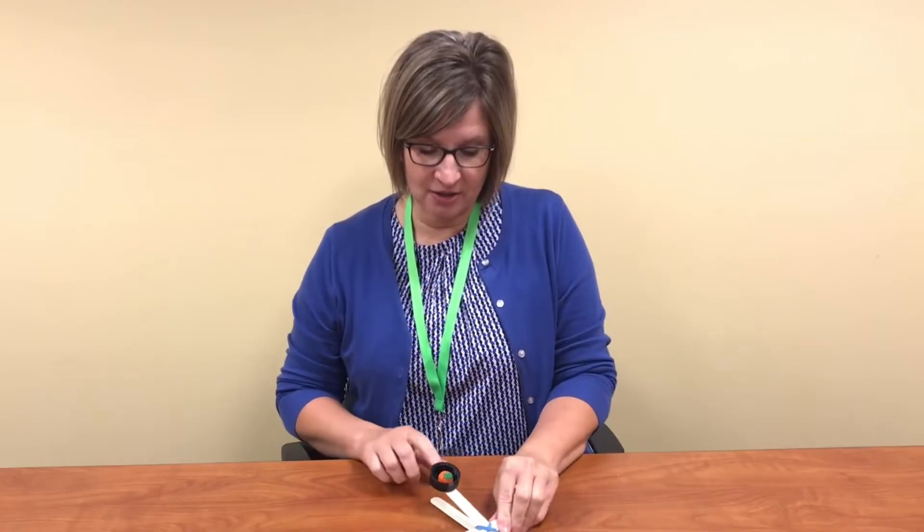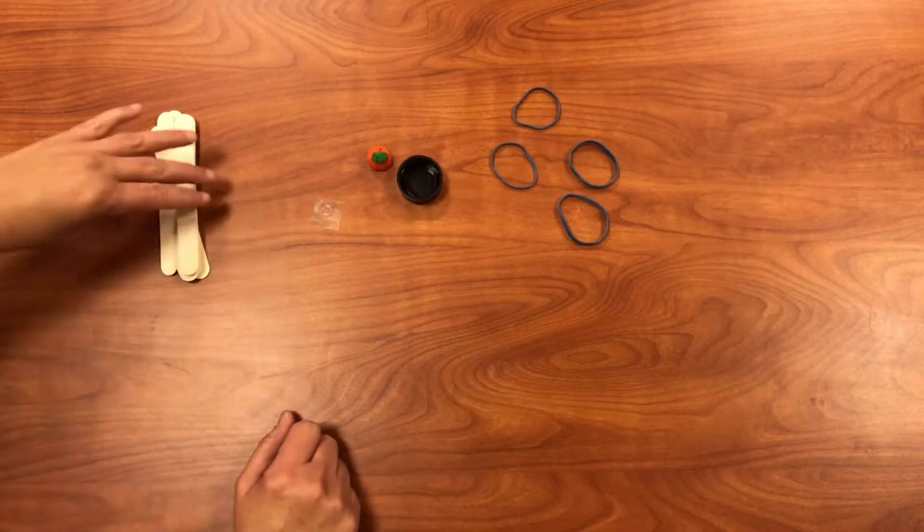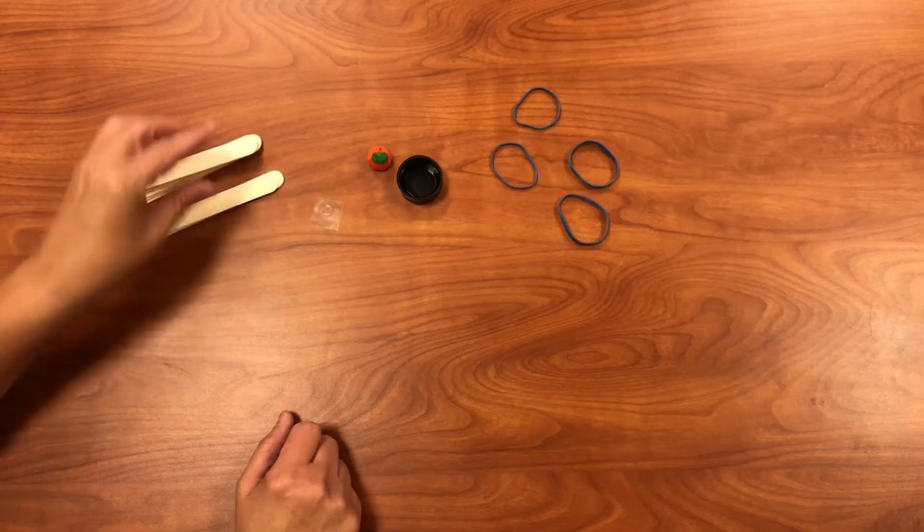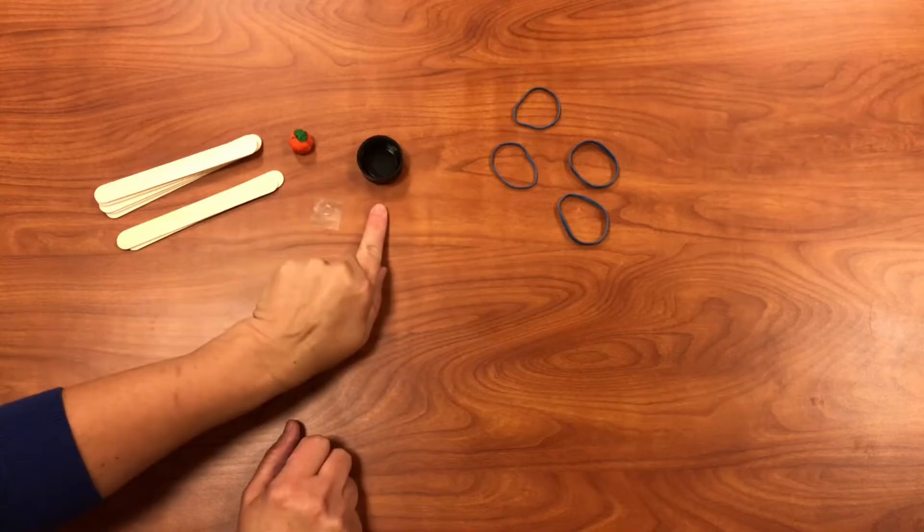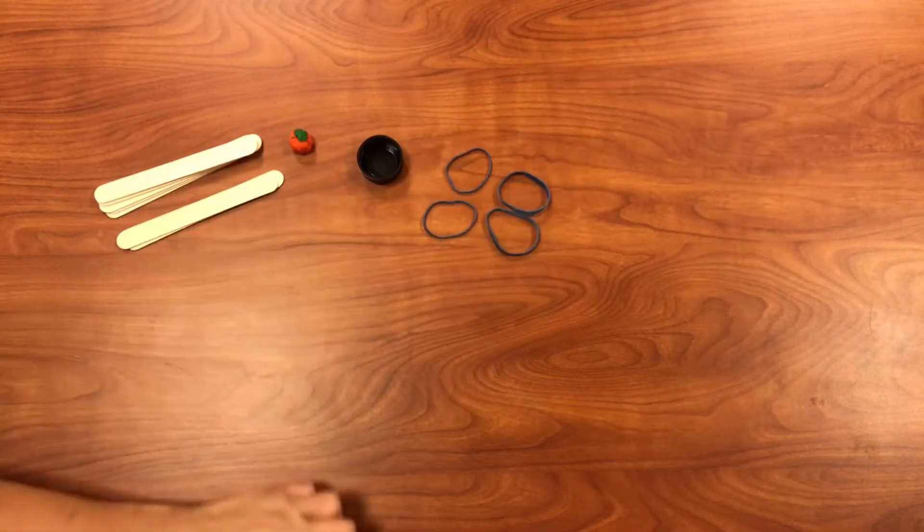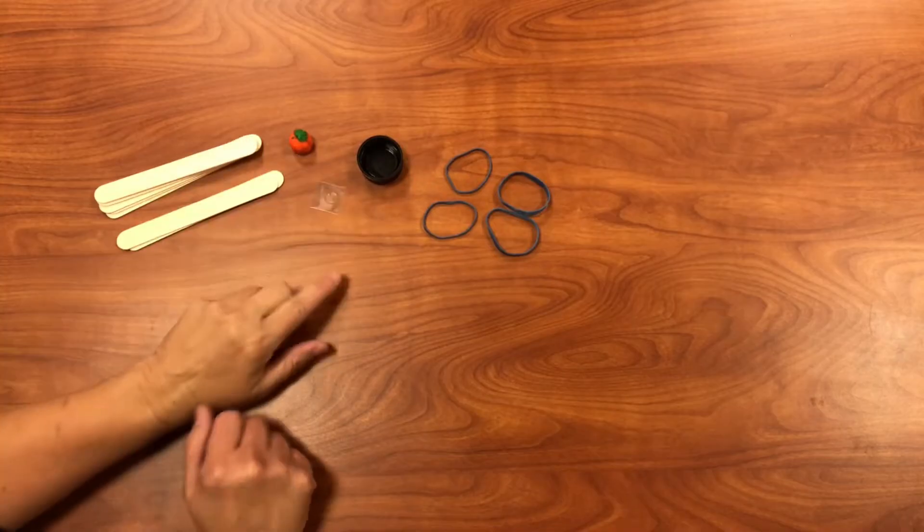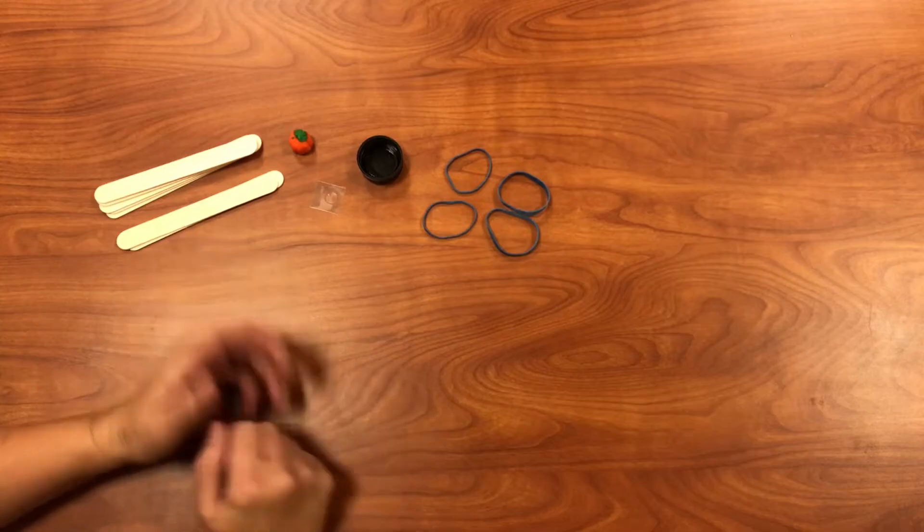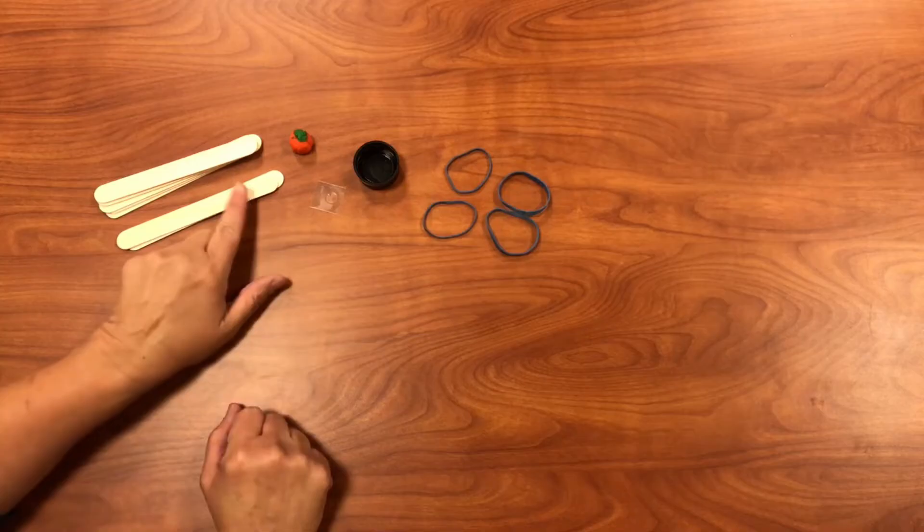Let's get started. To make your catapults you're going to need your craft kit that includes seven craft sticks, a candy pumpkin, a lid, and four rubber bands. You also have a little glue dot in your kit in case you don't have a hot glue gun available. I would recommend a hot glue gun if you have one; that's what we'll be using to adhere our cap to our stick. That works a little bit better, but the glue dot does work as well.